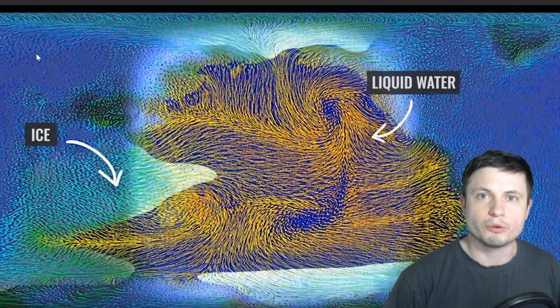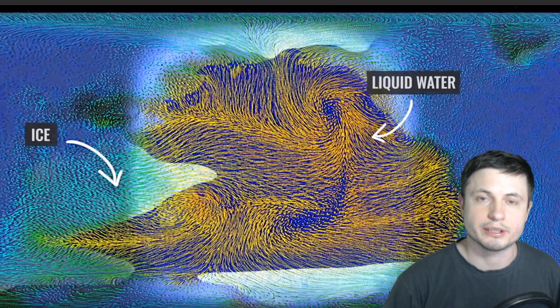Water doesn't even get there simply because the continents actually block water circulation. However, if we were to reverse our planet and have Africa face the star, it would look entirely different.